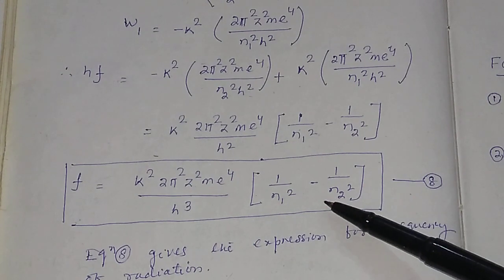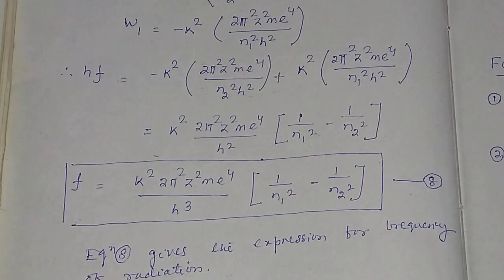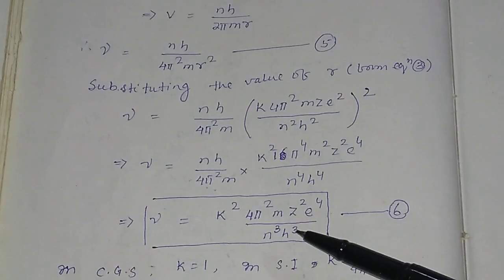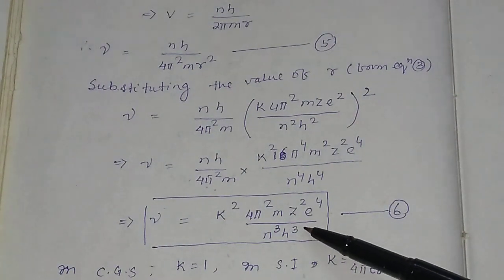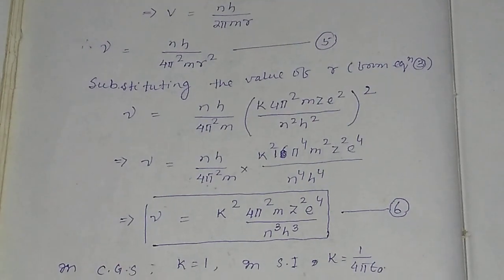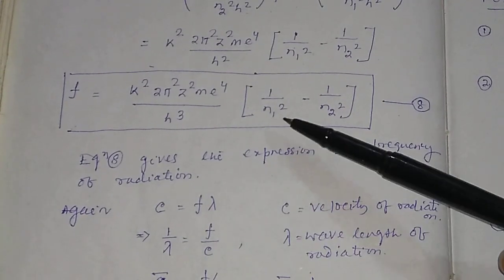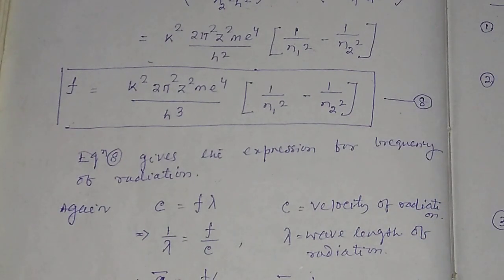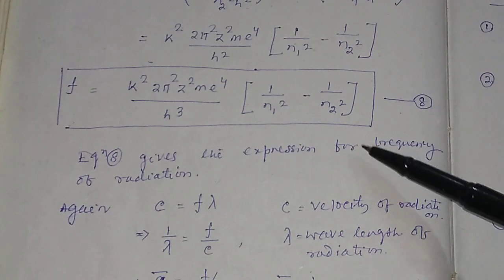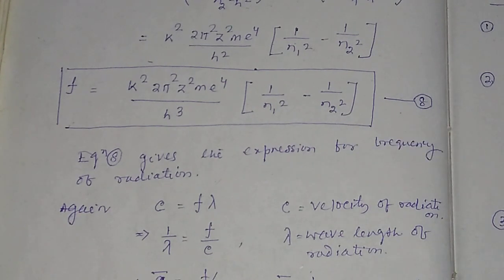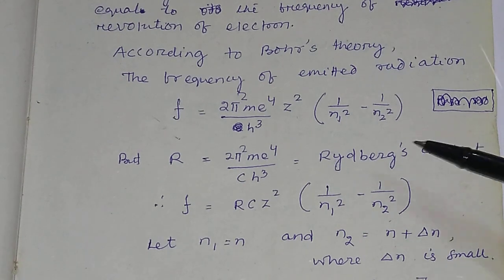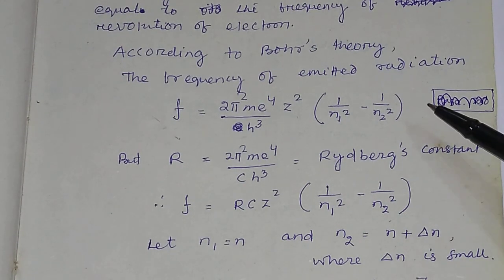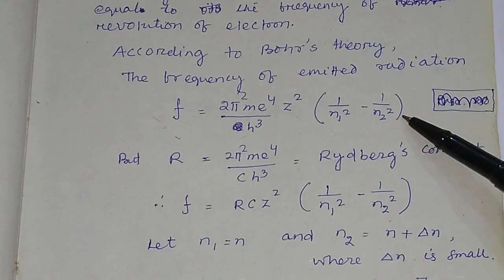So we have two frequencies: one is the frequency F of electromagnetic radiation, and the other is ν, the orbital frequency of the electron. According to Bohr's Correspondence Principle, ν equals F. Let us now prove this — that the frequency of emitted radiation equals the orbital frequency of the electron.